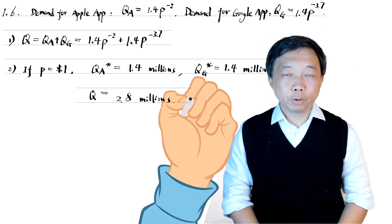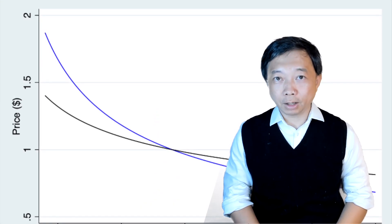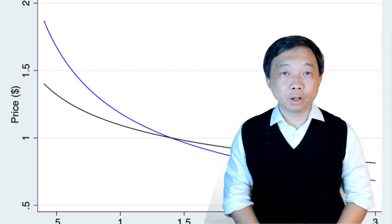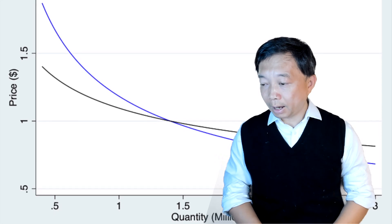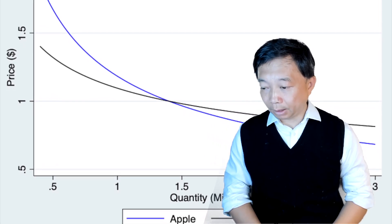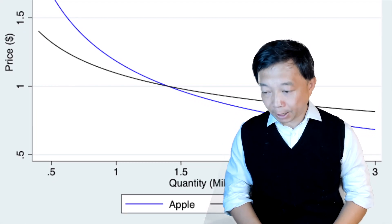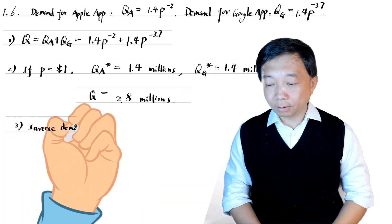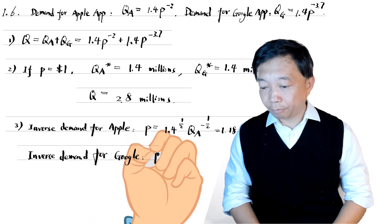In addition, if you are curious about the shape of the demand curves, you can use data to draw the curves. Please check out my videos on data graphics to learn more about it. Here are the demand curves for Apple apps and Google apps. We see that the demand curve for Apple apps is steeper than the Google apps. When the price is one dollar, the quantity demanded is the same for both curves. To plot the curves, we should write down the inverse demand function first. That is the price as a function of the quantity demanded.